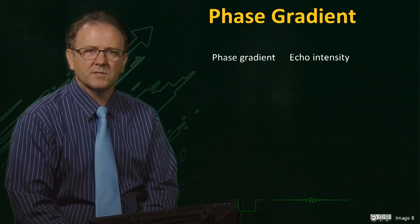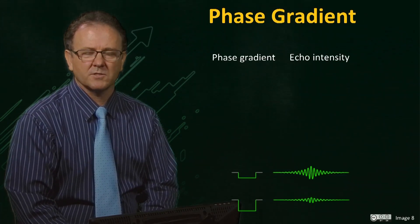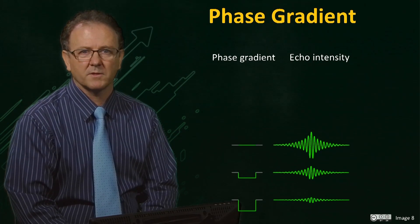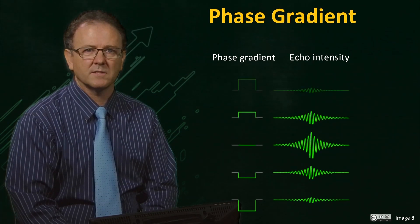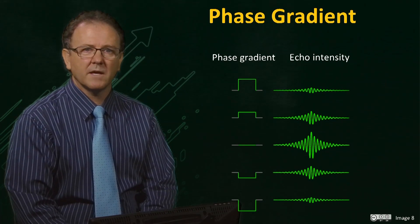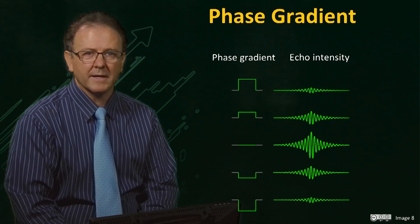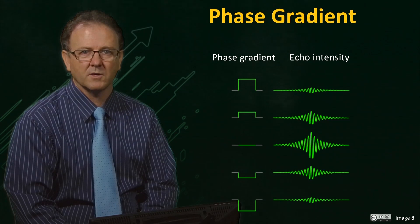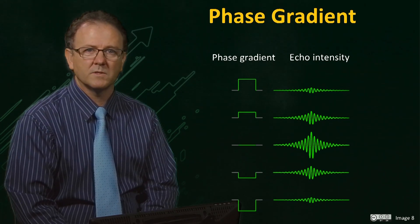At larger phase gradient values, the magnetisation will be significantly dephased by the gradient, so echo intensities are reduced, often to zero. At smaller values, the echo is more intense, and at a maximum when the phase gradient is zero, providing the image with its signal to noise.